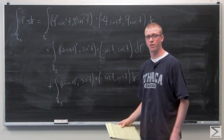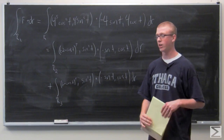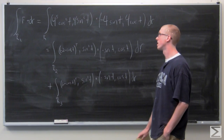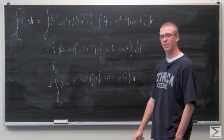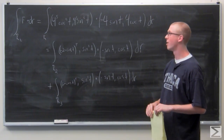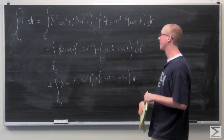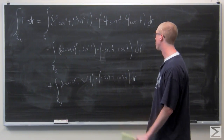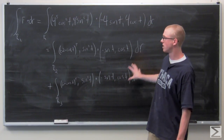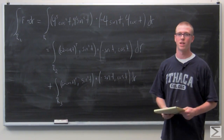Now that we've plugged in for this entire integral, we can leave this as our final answer. Over R1 we have (4⁵cos⁵(t), 4³sin³(t)) dotted with (−4sin(t), 4cos(t)), and this equals the sum of the integrals over R2 and R3 as seen in our original diagram. This is our final answer for the value of that integral.